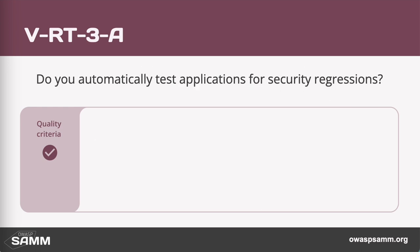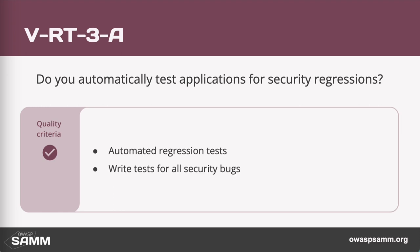At level three, this is really saying we've got automated regression testing. This could be really hard — having full automation and covering all possible, or many of the possible, negative test cases is challenging. Moreover, anything that is reported as a security bug is, aside from fixing it, added to the test cases as well.